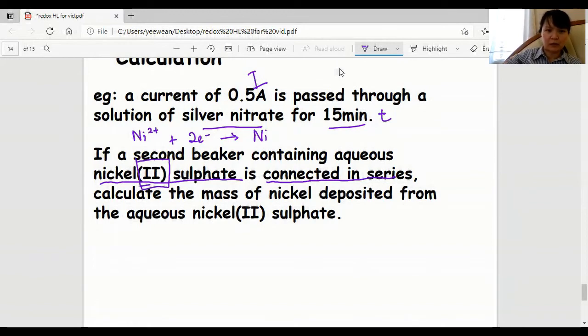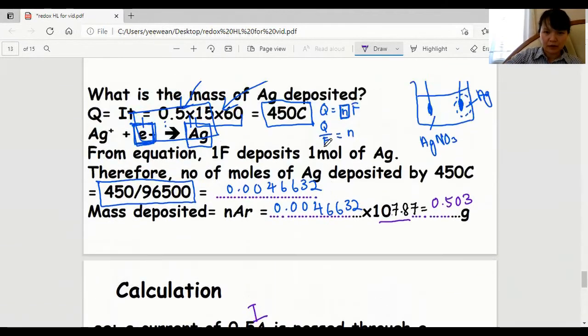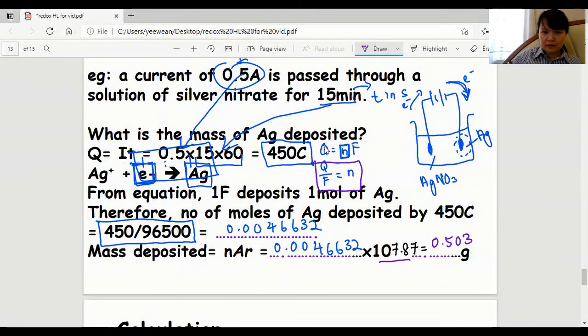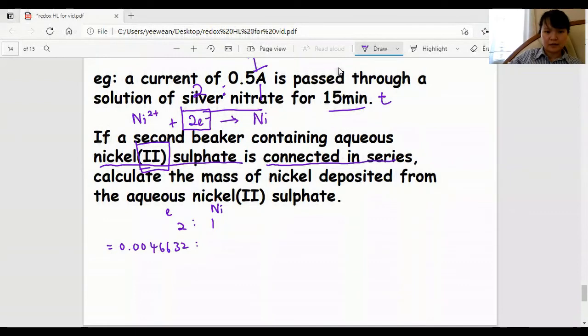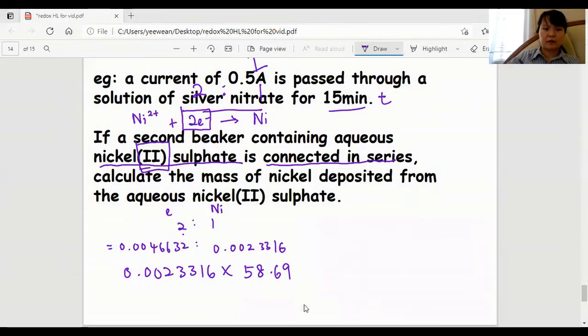We're calculating how much nickel will be deposited. Up to this part, it's the same as before, so I still get 0.0046632 moles of electrons. But the ratio is different, it's two to one. Since electron to nickel is two to one, 0.0046632 gives 0.00233116 moles of nickel. That figure multiplied by the MR from the data booklet gives 0.137 grams.